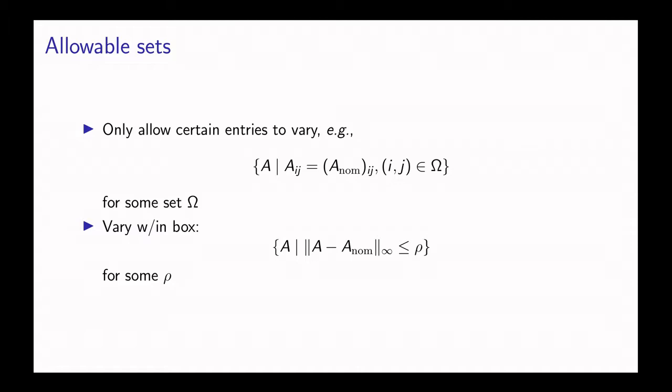Another possibility is that we could allow A to vary within a box, so it has to be close to A nominal.